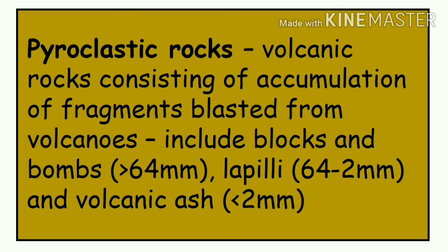The last type is pyroclastic rocks, which is also part of igneous rocks. Pyroclastic rocks are volcanic rocks consisting of accumulation of fragments blasted from volcanoes. They include: blocks and bombs — greater than 64 mm in size; lapilli — 2 to 64 mm; and volcanic ash — less than 2 mm.